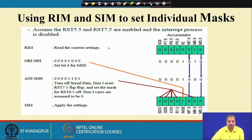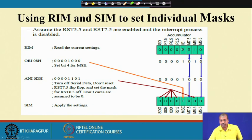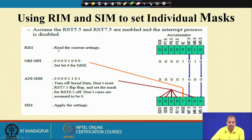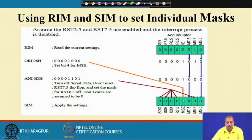We assume RST 5.5 and 7.5 are enabled and the interrupt process is disabled. The IE bit is 0, 7.5 and 5.5 are not masked, and 6.5 is masked. After executing RIM to get the current setting, we need to prepare for the SIM instruction. In the SIM instruction, bit number 4 is the MSE (mask set enable). By ORing with 08 hex, bit number 4 is set regardless of the value read by RIM.